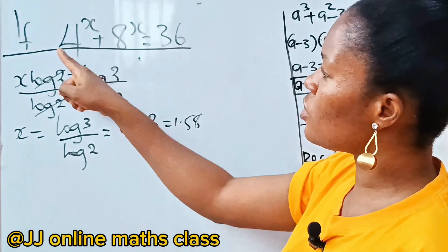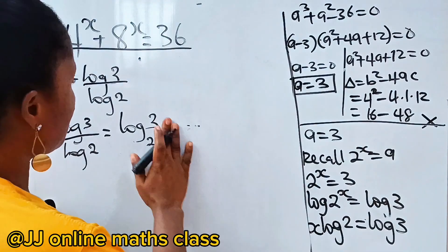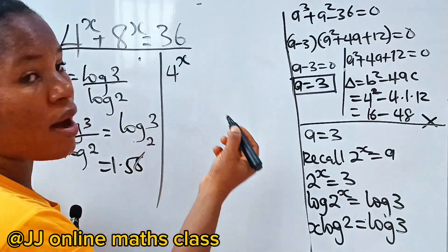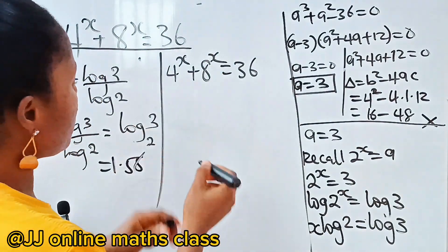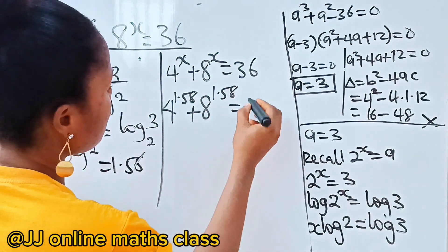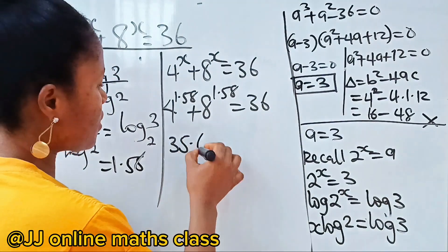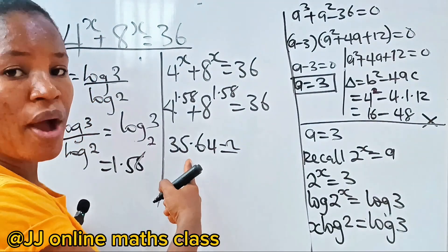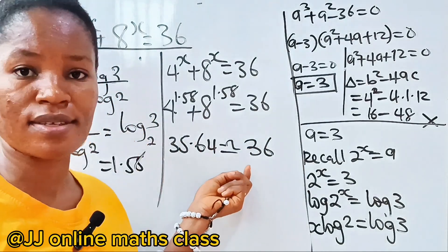Let's verify: substituting x ≈ 1.58 back into the original equation, 4^1.58 + 8^1.58 ≈ 35.64, which approximates to 36. This confirms our solution is correct.